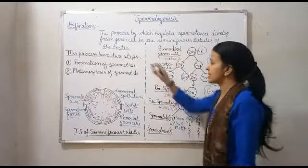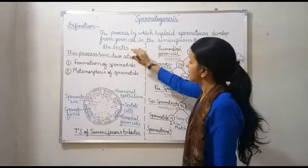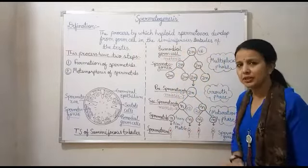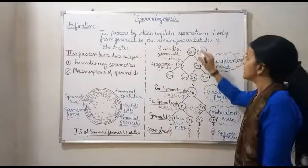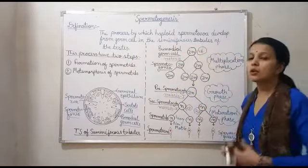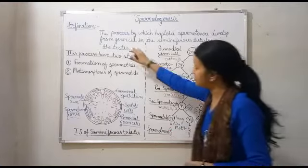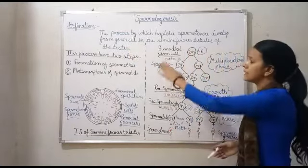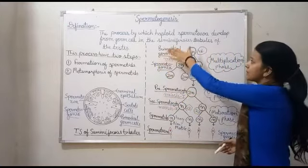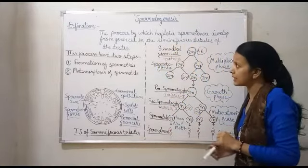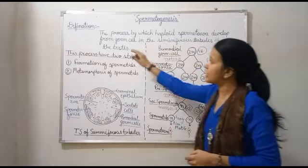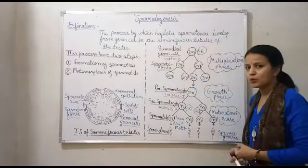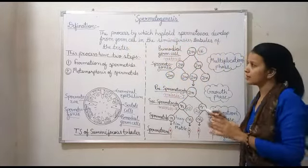First location is testis. Testis के अंदर seminiferous tubules present होती है। Seminiferous tubules के अंदर germ cells form कर रही है। तो testis location है जहाँ पर seminiferous tubules present है और germ cells formation कर रही है haploid spermatozoa की। This is the definition.